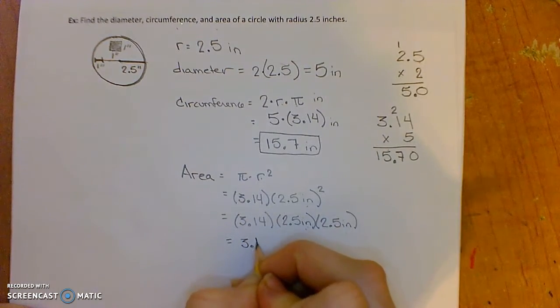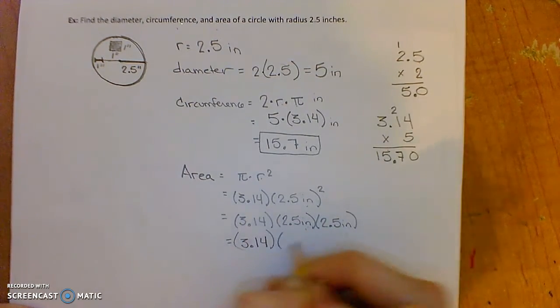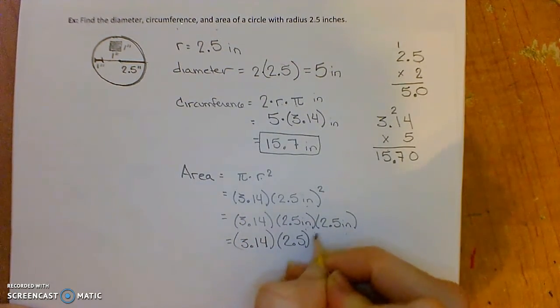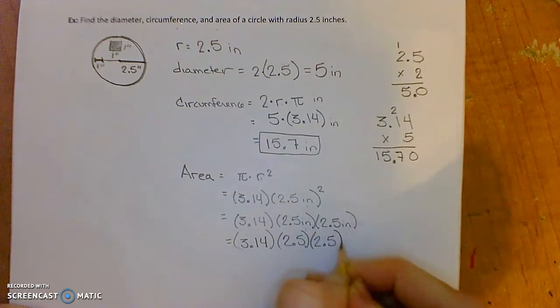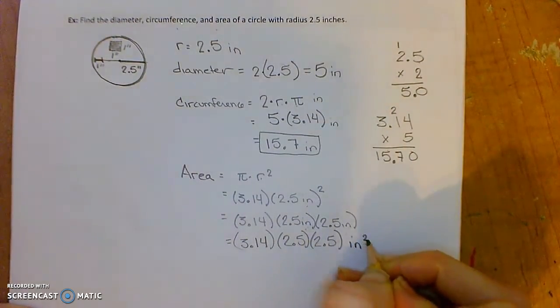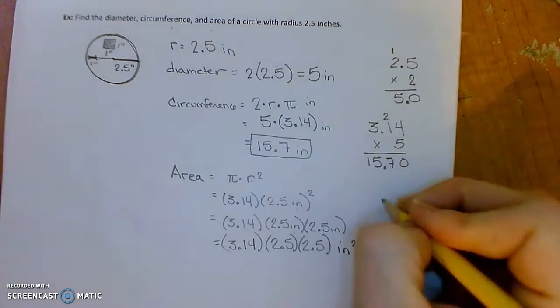So I'm going to have 3.14 times 2.5 squared, or 2.5 times 2.5, and my units will be inches squared. Let's do all my calculations here.